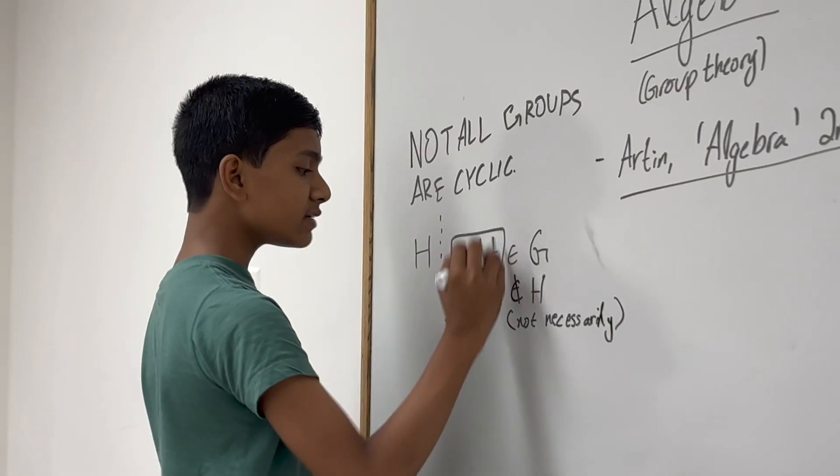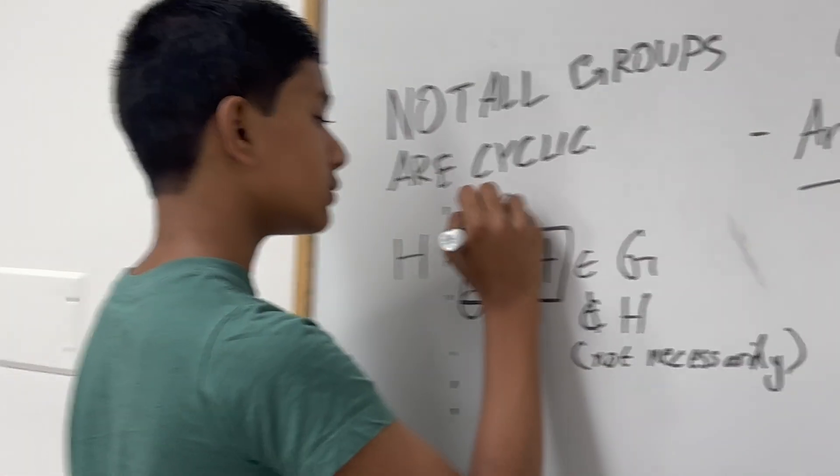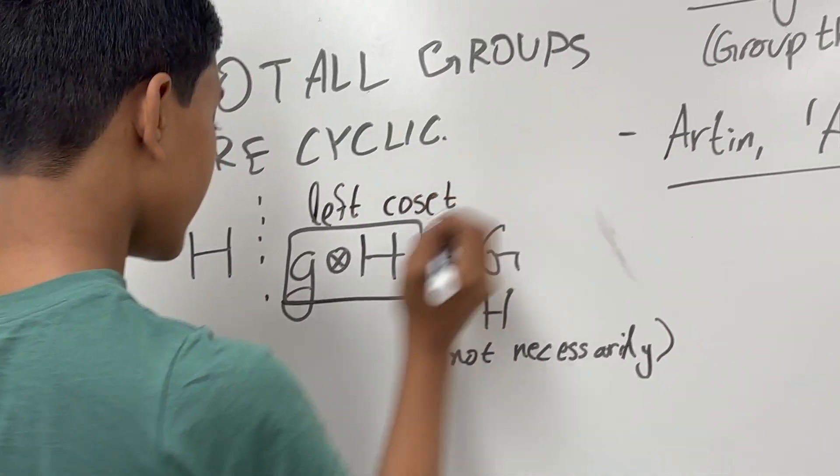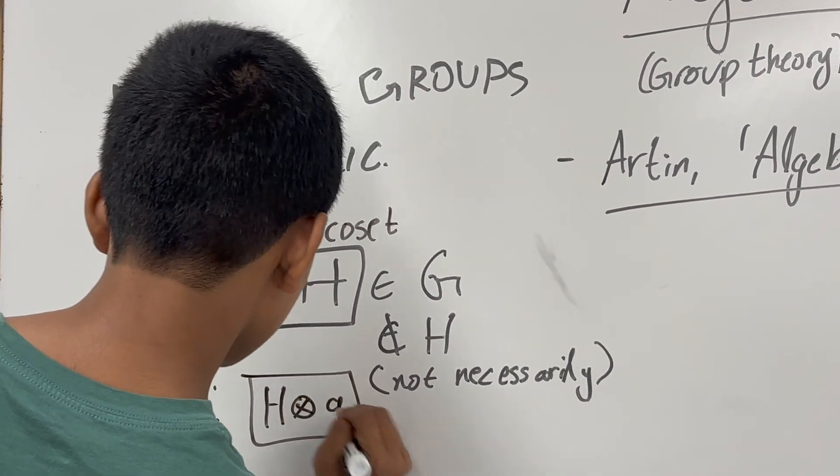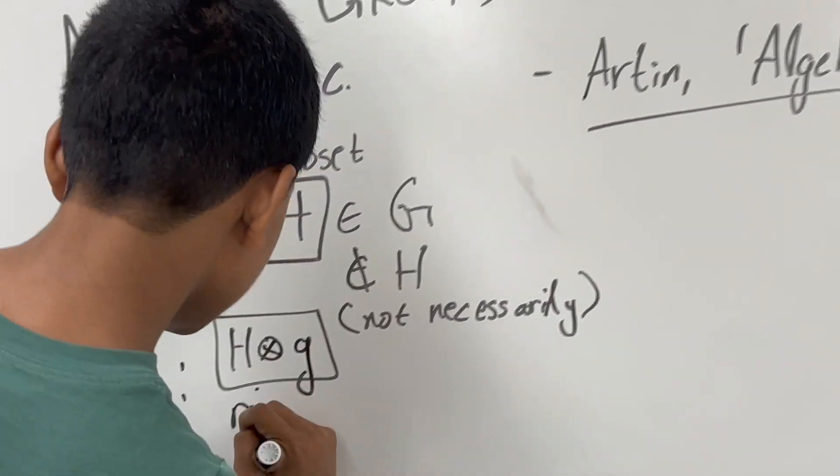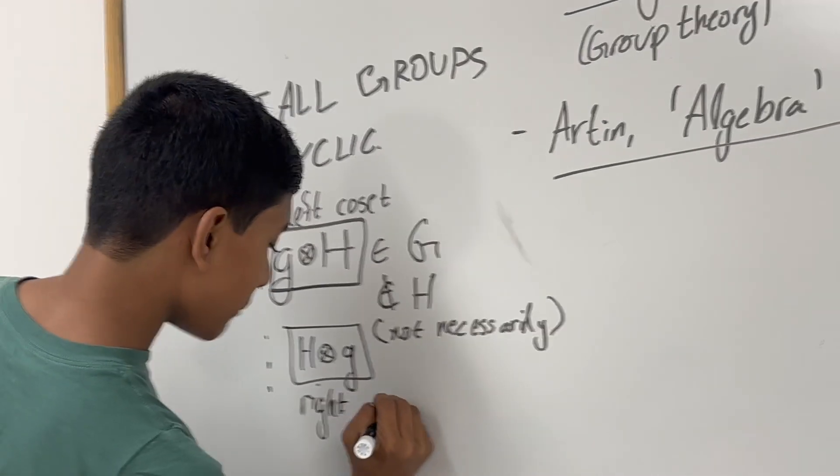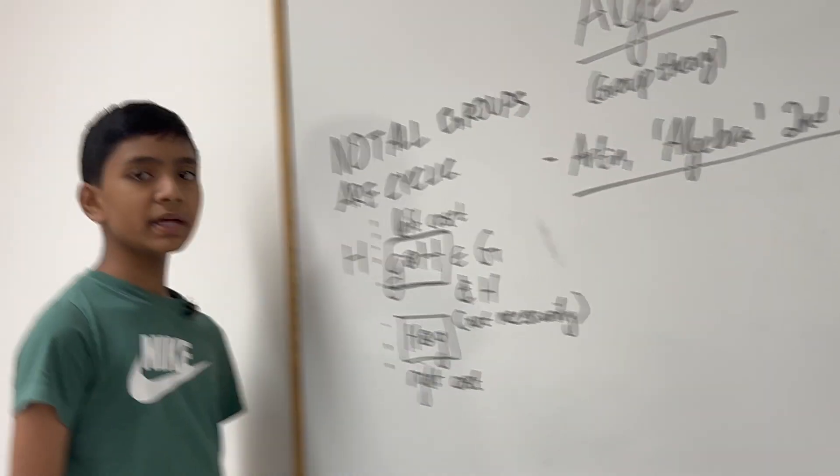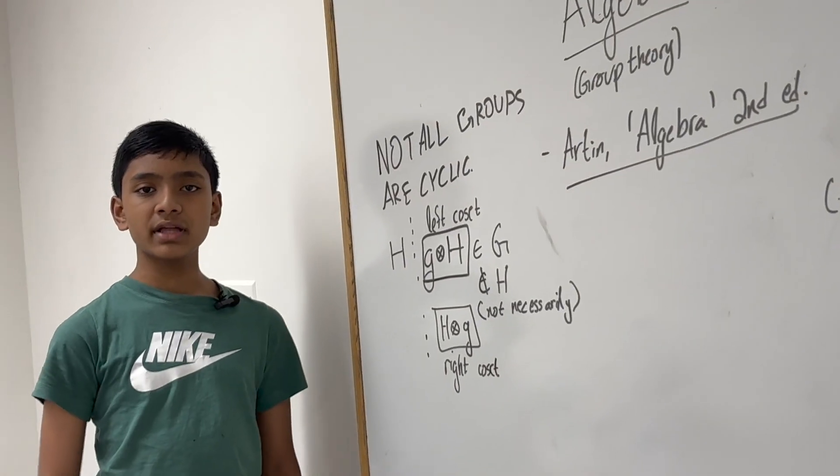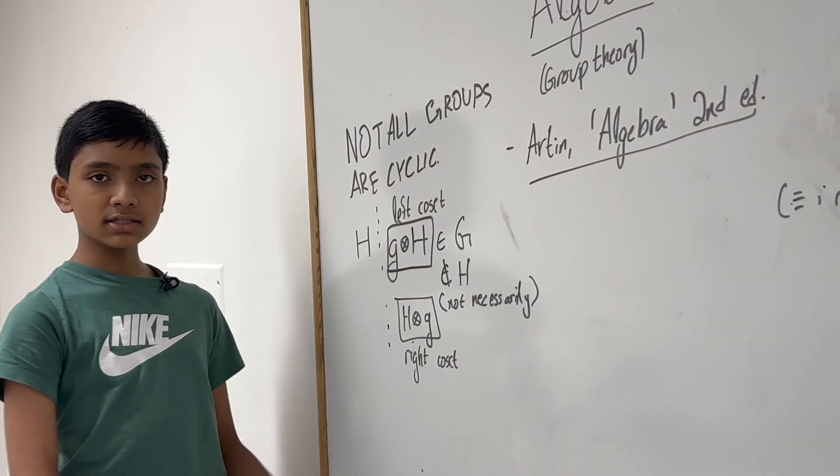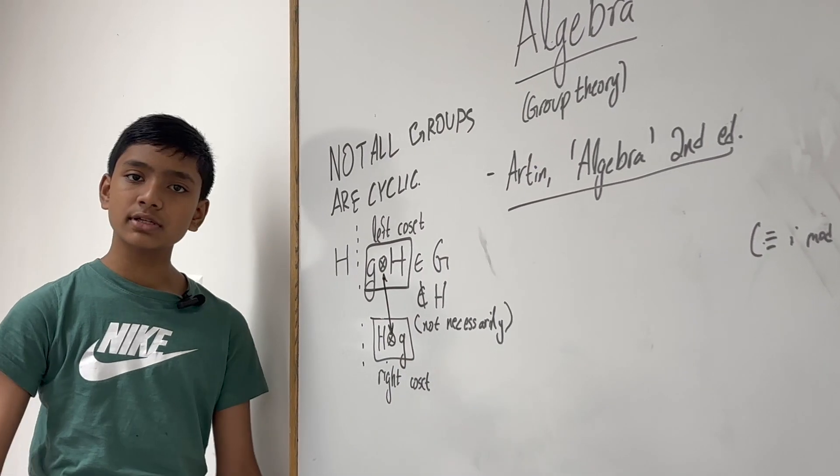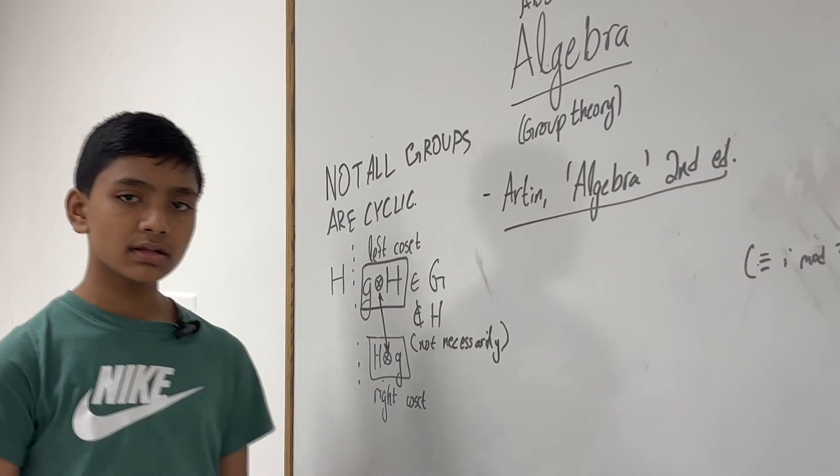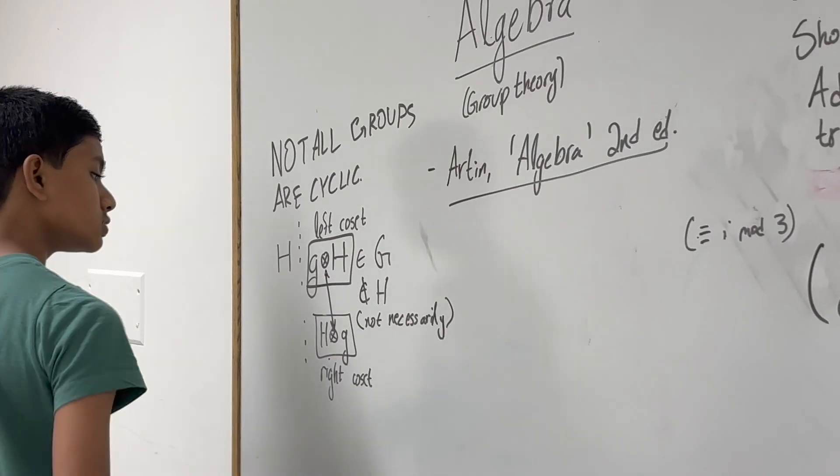Since this has to be closed under this operation, that means this is still in G, but it doesn't necessarily have to be in H. So this is what we call a coset. In this form, it's a left coset, and in this form, it's a right coset. You might say, aren't those the same? But remember, not all groups are abelian.